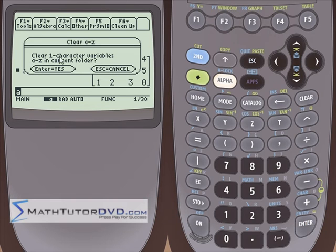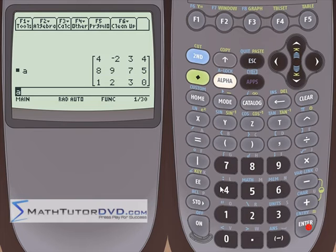So clear it. It says I'm going to clear one character variables, which means A, B, C, D, E, F, G, all the way to Z. Hit enter and it's gone.